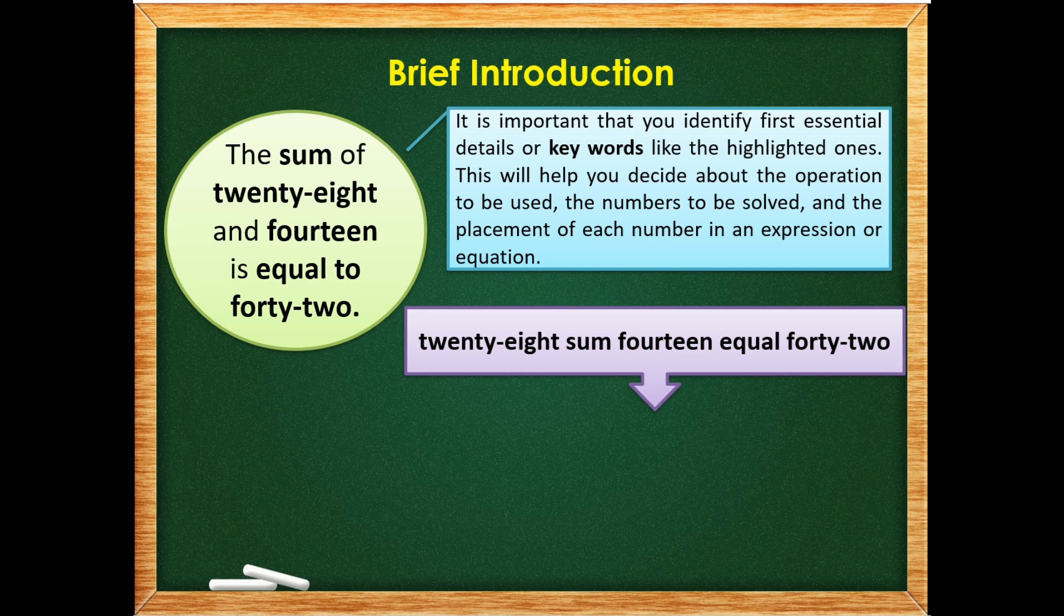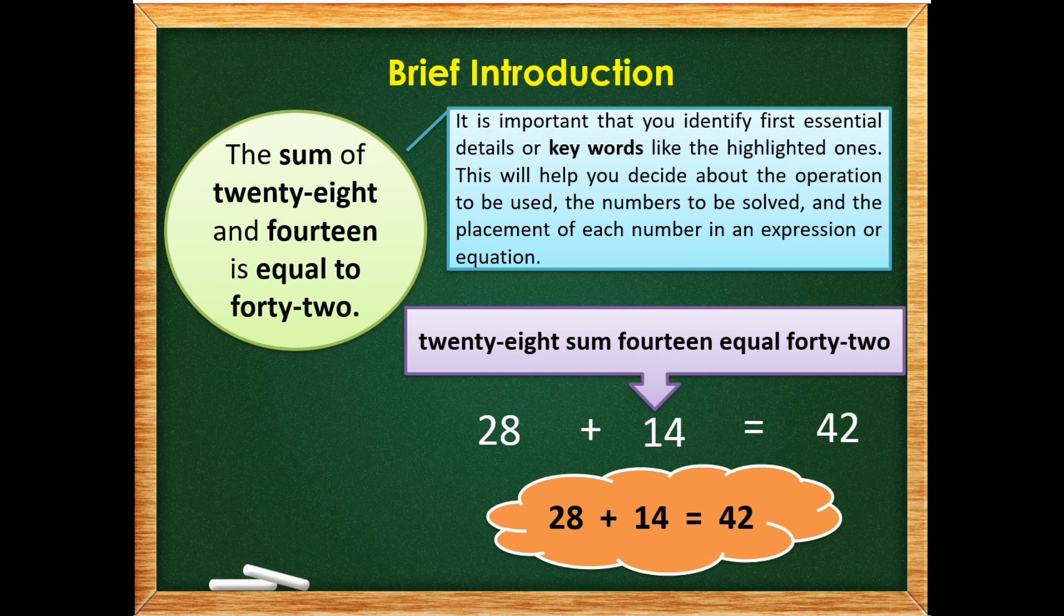Now let's translate these following words into numbers. We have first, 28, sum, which means addition, 14, equal to 42. So how are we going to write that one? That is 28 plus 14 is equal to 42.